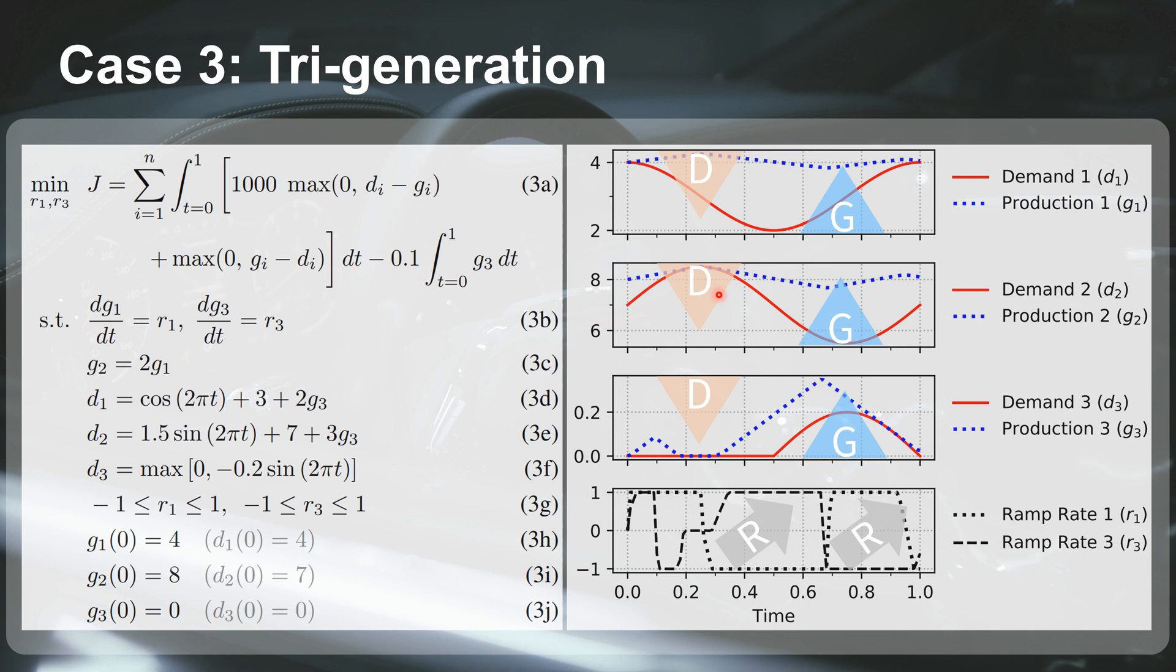So this could be something like for an automotive application to be able to provide electricity, heat, and the hydrogen. And you could see the two ramp rates that coordinate to meet these three demands.